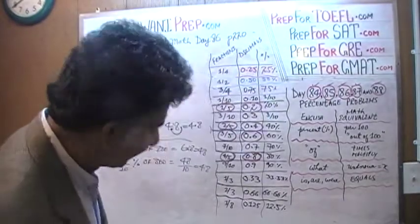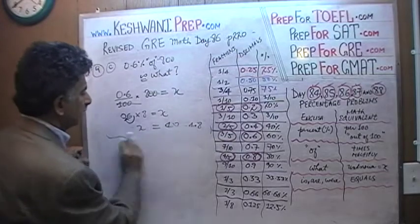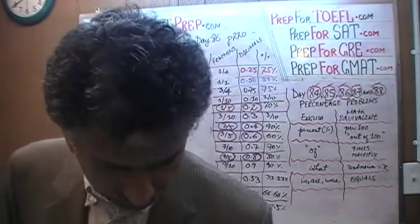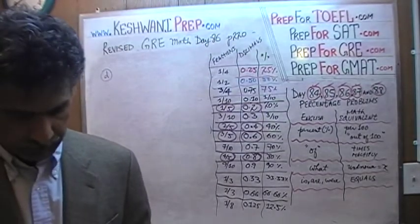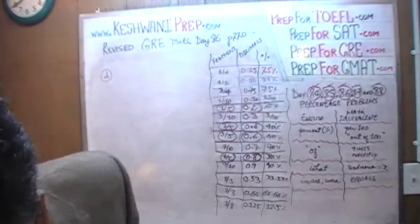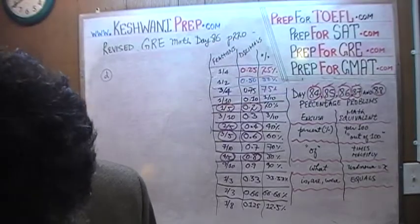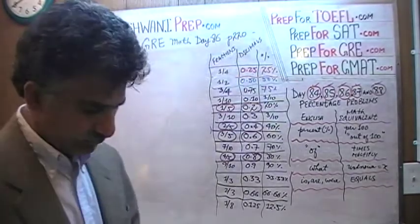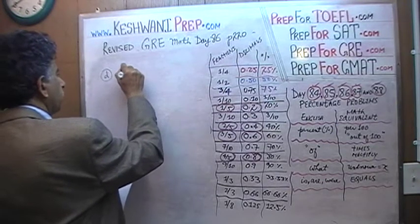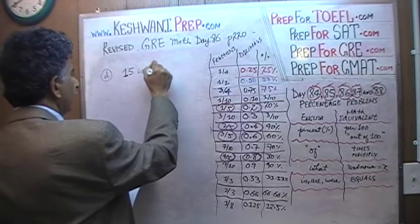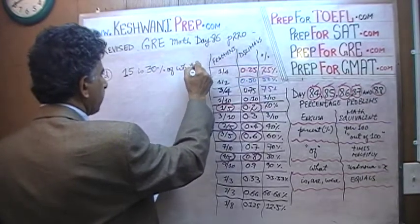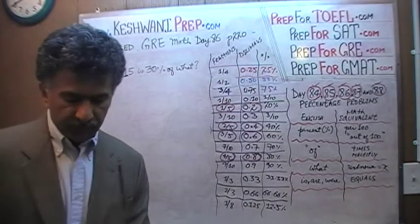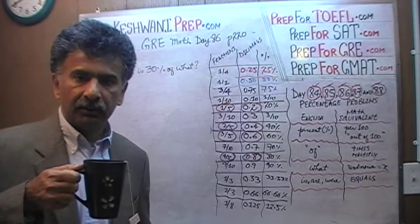Let's take a look at problem 9D. Problem D says: 15 is 30% of what? Translate it one word at a time — don't try to read the whole thing at once, which is why people make mistakes in setting up their equation. They want to gobble up the whole plate in one shot, but that's not how one has a meal: one bite at a time, one word at a time.